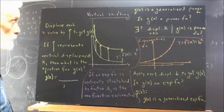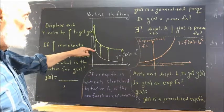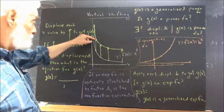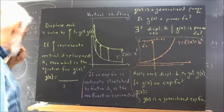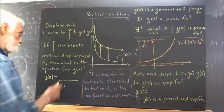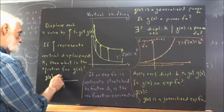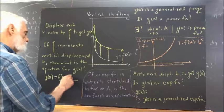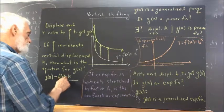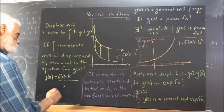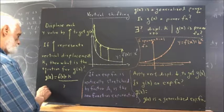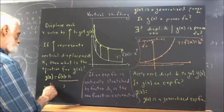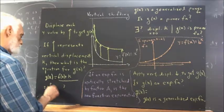Well, then whatever Y is, it becomes Y plus K. So that our G of X function is going to be equal to F of X plus K, which is just equal to X to the P plus K.